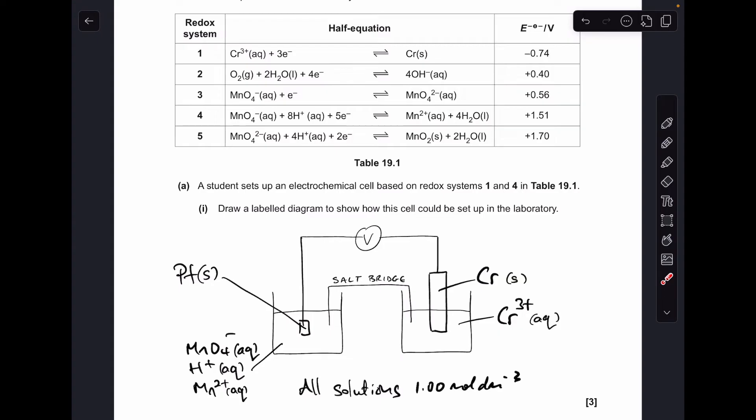Okay, so make a start. The first thing I'm going to do is draw the setup for the electrochemical cell based on systems 1 and 4. So I've gone for system 4 on this side. It doesn't matter which way around you do it. In the beaker, you need MnO4⁻ ions in solution, H⁺ ions, and Mn²⁺ ions. Don't forget about those H⁺ ions, that would be a common mistake there.